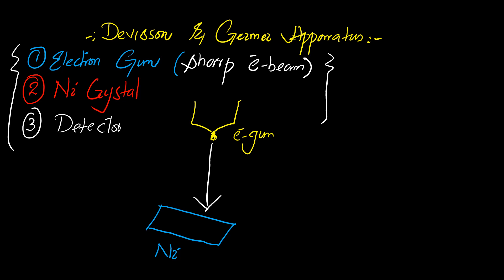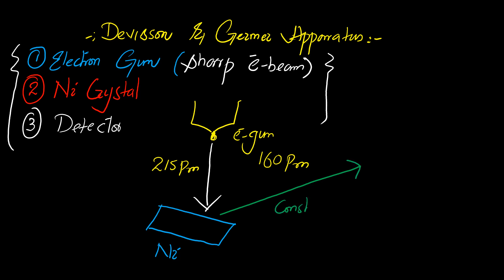The spacing or distance between the planes of a nickel crystal is around 215 picometers. The electron beams usually have a very short wavelength, around 160 picometers. Whenever these electron beams are incident on the crystal's lattice, they undergo diffraction, and this diffraction was sometimes constructive and sometimes destructive.